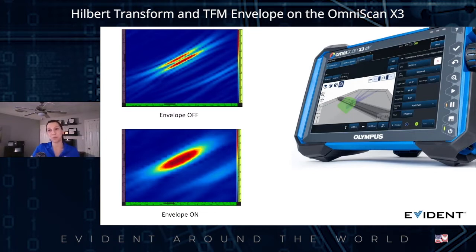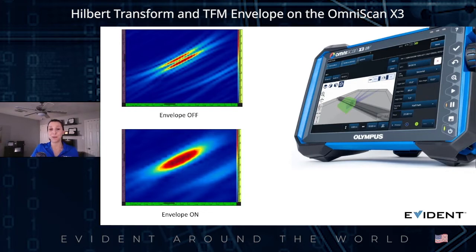The Hilbert Transform generates a unique TFM envelope — one that not only increases the speed of inspection but also makes sizing easier. It enhances amplitude fidelity, and more importantly, it doesn't lose any relevant information.